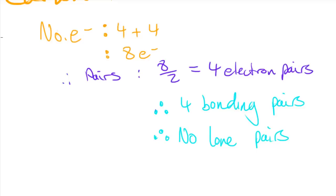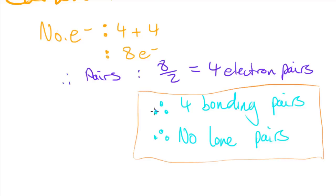Now that we've done this, we know that for carbon tetrachloride there are 4 bonding pairs and no lone pairs. In the next video I'll be going into how we can work out the shapes of molecules from this information. I hope you found this video helpful and I'll see you in the next video.